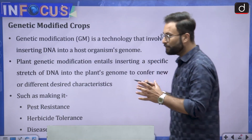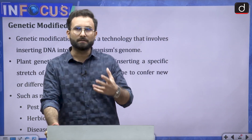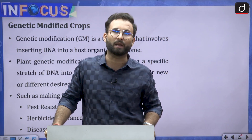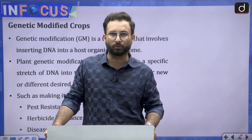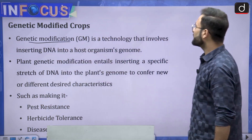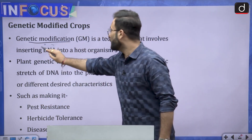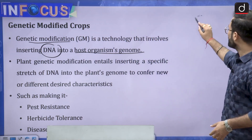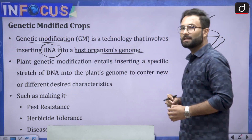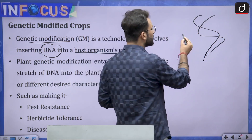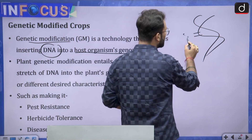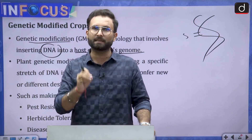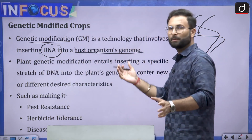Coming to genetically modified crops — whenever certain genes have been modified in a plant to get a desired result or characteristic, that process is called genetic modification. Genetic modification is a technology that involves inserting DNA into a host organism's genome. In the double helix structure of DNA, another gene is introduced from outside that is responsible for a desired specific trait. That is called gene or genome modification.